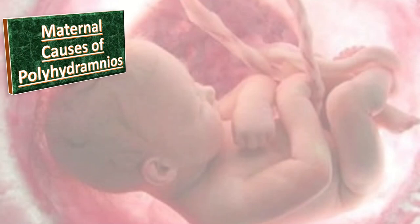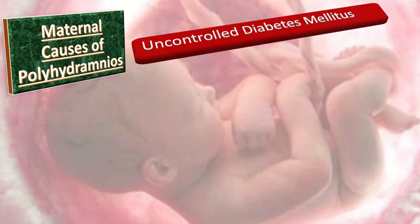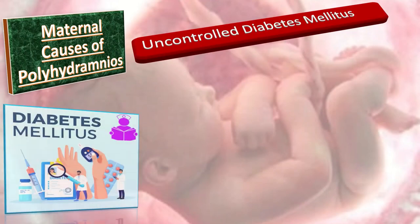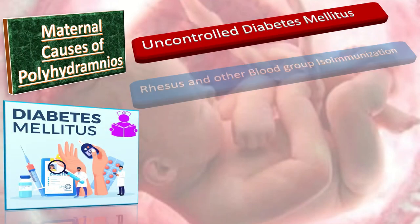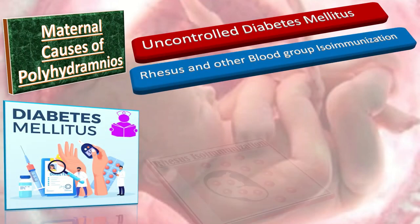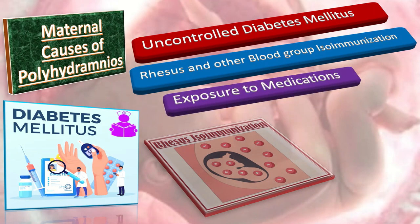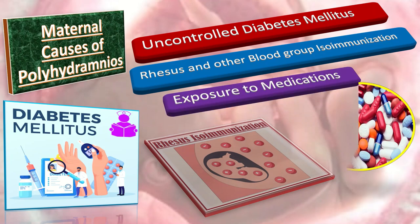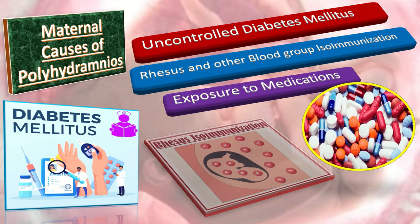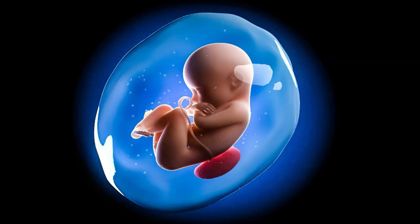The maternal causes of polyhydramnios include uncontrolled diabetes mellitus, rhesus and other blood group isoimmunization, and exposure to medications such as lithium, which leads to fetal diabetes insipidus.